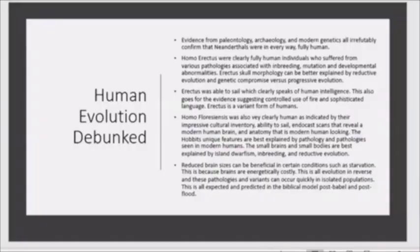Just a few points here: evidence from paleontology, archaeology, and modern genetics all irrefutably confirmed that Neanderthals were in every way fully human. Erectus, for example, was able to sail, which clearly speaks of human intelligence. Homo floresiensis was also very clearly human, as indicated by their impressive cultural inventory, ability to sail, endocast scans that reveal a modern human brain, and anatomy that is modern human-looking.